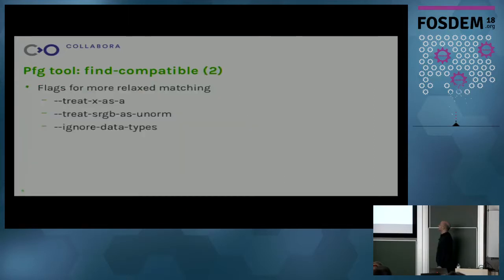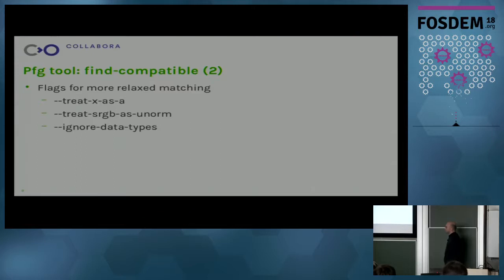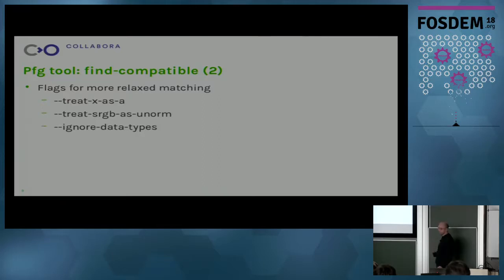By default, the find-compatible operation does a very strict matching between pixel formats. But it's often useful to relax the matching a bit, so we have a few flags. One is treat-X-as-A, which treats unused parts of a pixel format value — also known as X — as equal to A. Then we have a flag to treat sRGB data type the same as UNORM, and an ignore-data-type flag that allows us to just ignore the data type completely and do bit matching for the components.